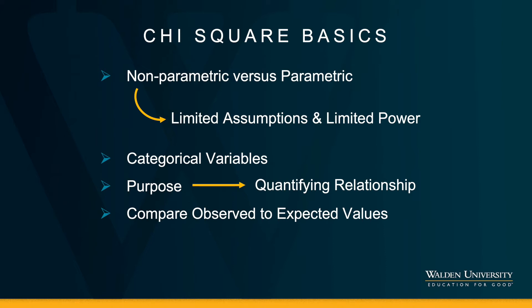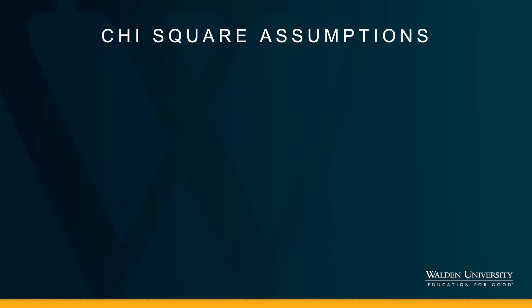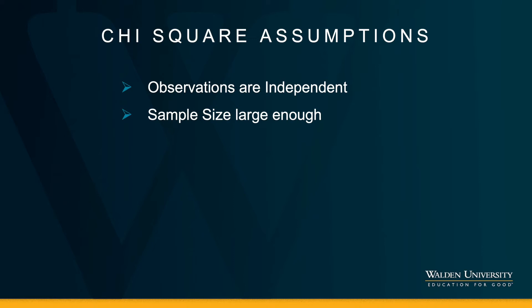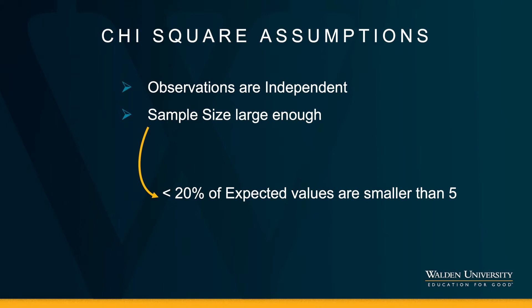There are really only two assumptions for the chi-square. The first assumption is that the researcher collected the data in such a way that left the observations independent. The second is that we have a sample size large enough to use this test — if the sample size is too small, you cannot trust or interpret the result. The sample size assumption is not measured by a full number, but is assessed by looking at expected values. We hope that no more than 20% of the expected values are smaller than 5. When we run this test in SPSS, I will show you how to evaluate the sample size assumption.